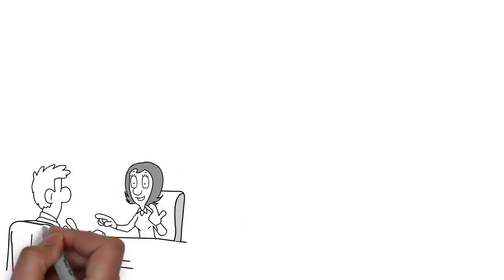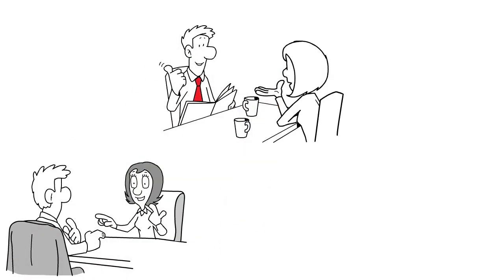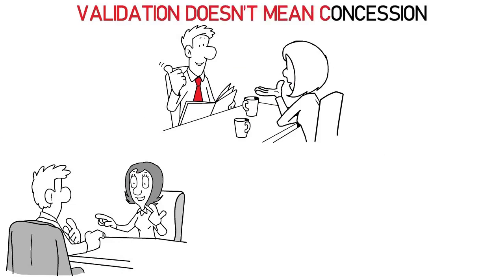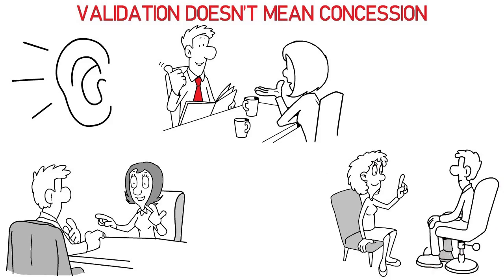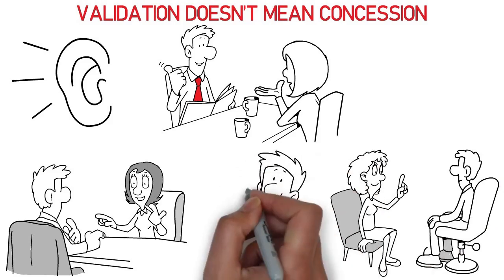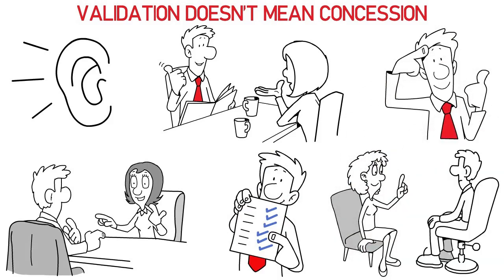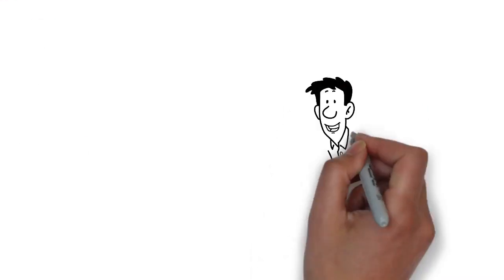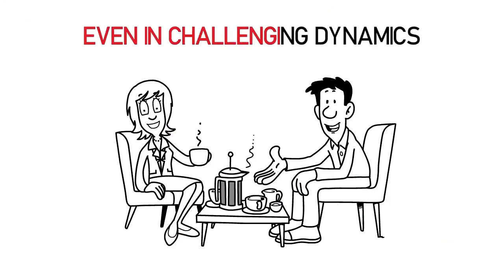9. Practice reflective listening. Acknowledge your spouse's feelings, showing understanding without necessarily agreeing to unfair demands or terms. Validation doesn't mean concession. It means you're listening. Stay focused and keep conversations on topic. This helps in navigating through diversionary tactics and ensures that the discussions remain constructive. Mastering reflective listening fosters healthier interactions, even in challenging dynamics.